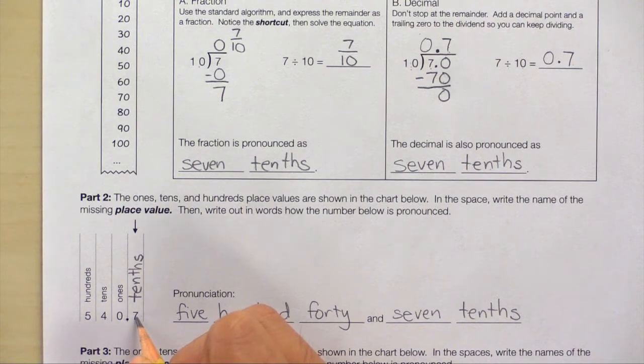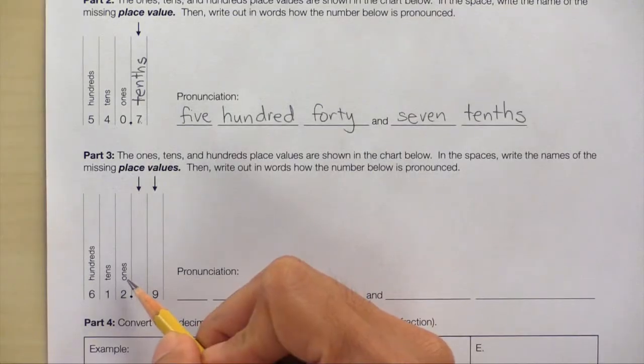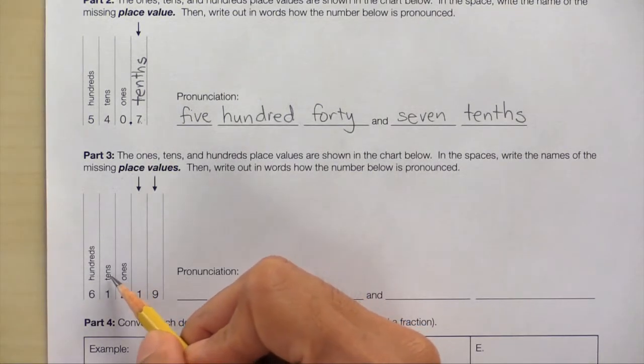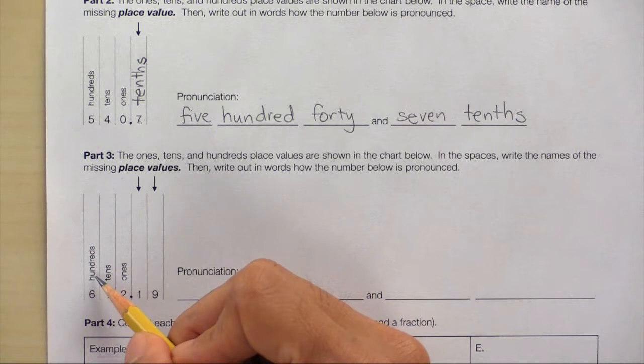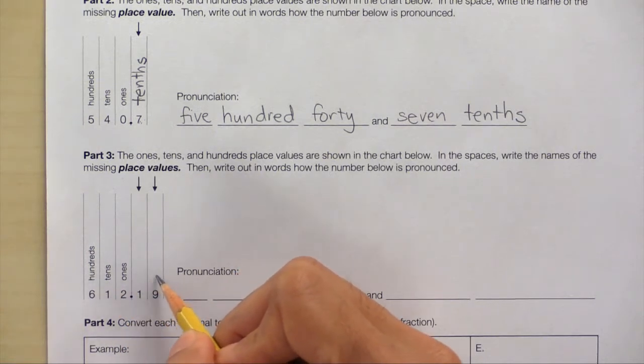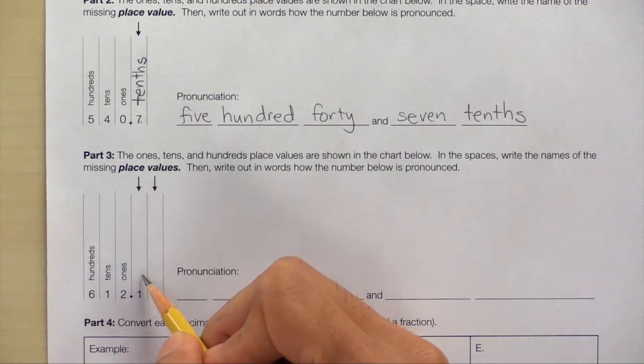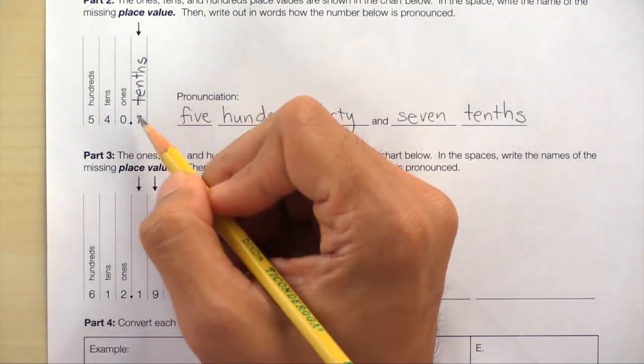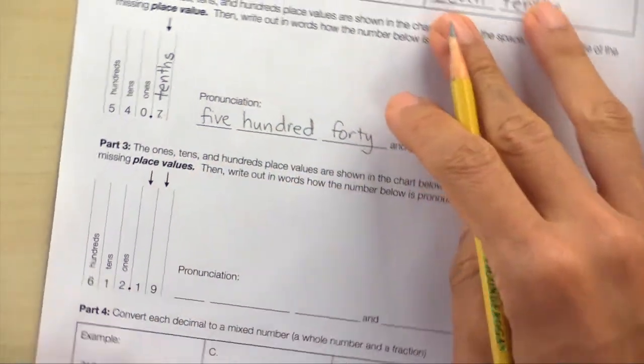And that means the 7 is in the tenths place value. Now for part 3. This place value chart shows the ones, tens, and hundreds place values. And we need to find the names of the missing place values here. I know this place value is the tenths place value because we figured that out in part 2.